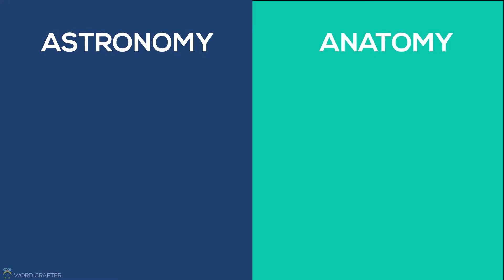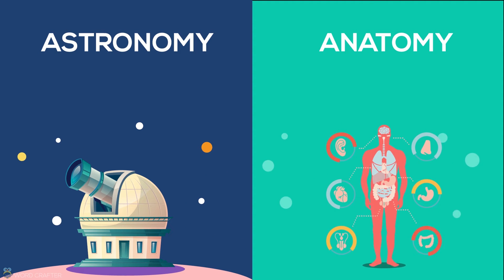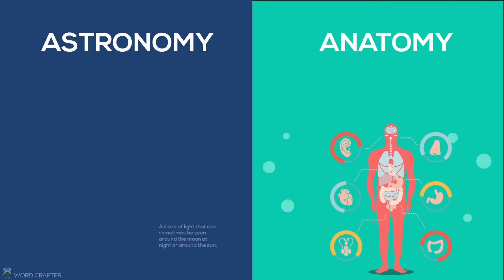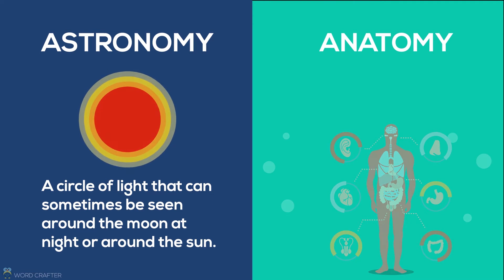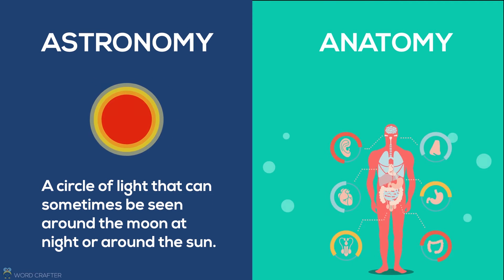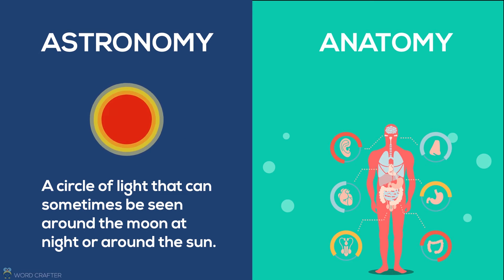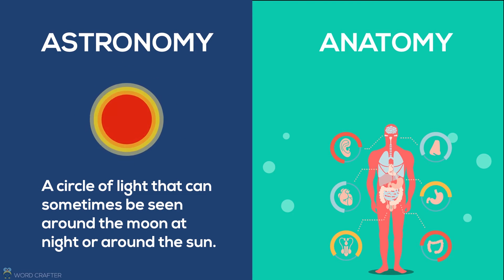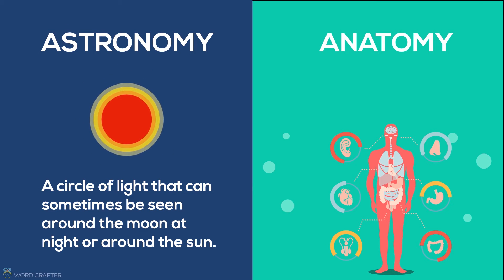The word corona has different meanings in astronomy and anatomy. In astronomy, corona refers to a circle of light that can sometimes be seen around the moon at night or around the sun. The sun's corona is normally visible only during a total solar eclipse.